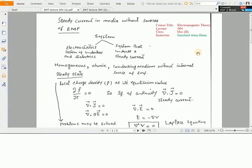Let us start with a homogenous, ohmic, conducting medium without internal source of EMF. Here we consider the steady state condition for a system in which local charge density is at its equilibrium value. If local charge density is at its equilibrium value and the time derivative of this charge density is equal to zero, it means that charge density is constant throughout the medium.